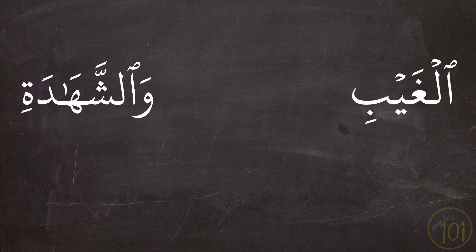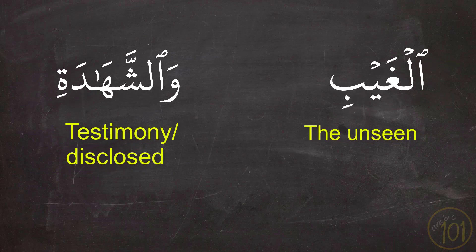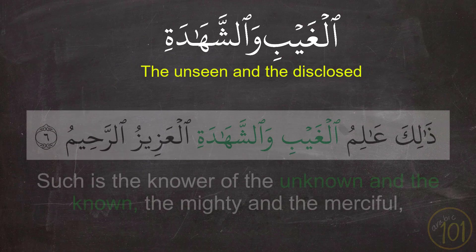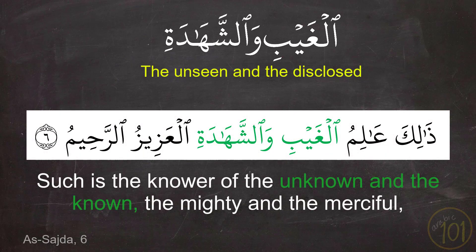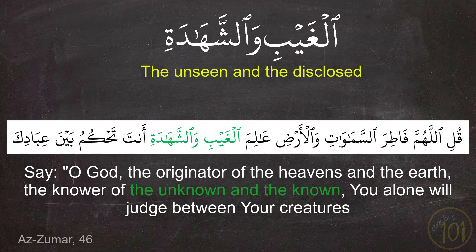The final combination is الْغَيْبِ وَالشَّهَادَةِ, made up of غَيْب, meaning 'the unseen,' and الشَّهَادَةِ, meaning 'testimony or the known.' The word الشَّهَادَةِ used separately always refers to testimony, but when used in combination with الْغَيْبِ it always means 'the known or the disclosed,' as in: ذَٰلِكَ عَالِمُ الْغَيْبِ وَالشَّهَادَةِ الْعَزِيزُ الرَّحِيمُ and عَالِمَ الْغَيْبِ وَالشَّهَادَةِ.